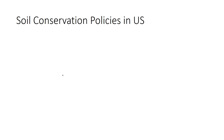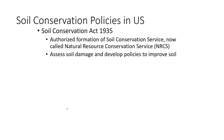In terms of soil conservation policies in the US, much of this was learned because of the Dust Bowl in the 1930s, which contributed to the Great Depression. We enacted some policies to help understand soil, its properties, and how we can go about maintaining it. In 1935 we passed what's called the Soil Conservation Act, which led to the formation of the Soil Conservation Service — now called the Natural Resource Conservation Service.